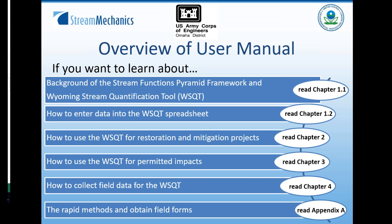The user manual is organized by background first, providing background on the stream functions pyramid framework and the Wyoming stream quantification tool. Chapter one talks about how to enter data into the spreadsheet. It's organized by whether you're evaluating a project for functional lift at a restoration or mitigation site, or whether you're using the tool to determine functional loss at a permanent impact site. Chapter two covers how to use the stream quantification tool for restoration and mitigation projects. Chapter three provides information for how to use the tool for Clean Water Act permitting. Chapter four provides data on how to collect field data, including both detailed and rapid methods, along with what data you need to collect in the field versus remotely.